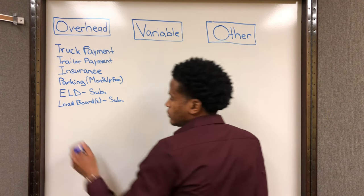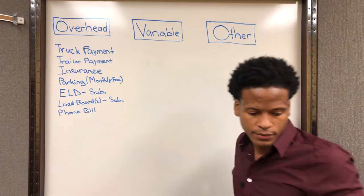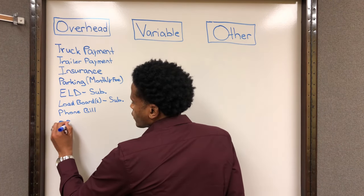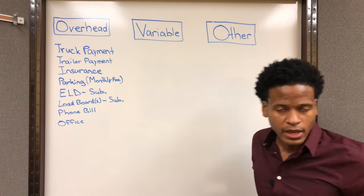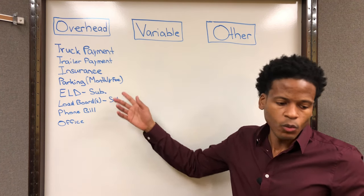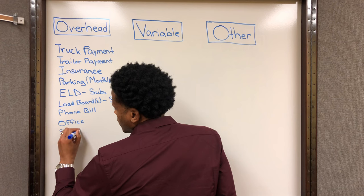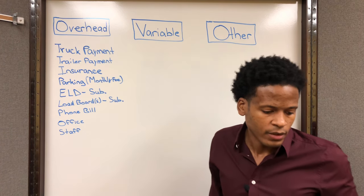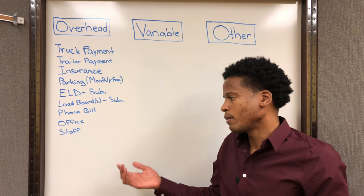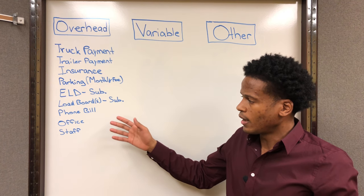The next item would be your phone bill. Then, depending on how big your operation is, you may be operating outside of your house where you have an office, so this would be like your office rent if you're renting a small office space. That's a fixed expense because it doesn't matter how hard the truck ran. Also, if you have any type of salaried office staff — an assistant or somebody that handles all the back-office paperwork — that's another expense that won't change based on how hard the truck is running. You're going to owe all of these expenses no matter how hard the truck ran that month.